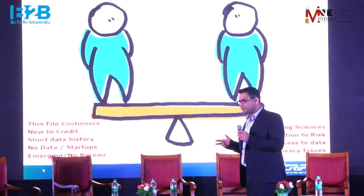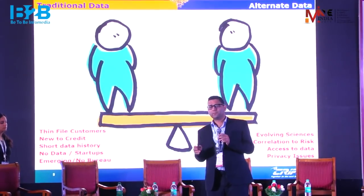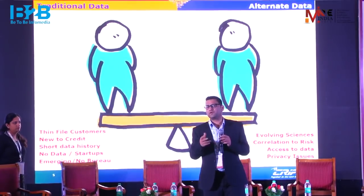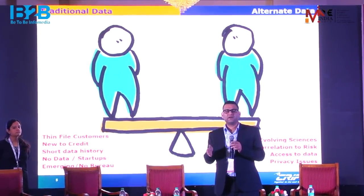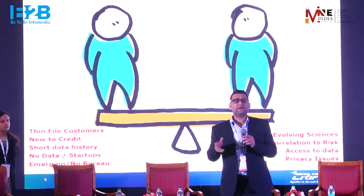Alternate data also has its own limitations. These are evolving sciences — every day a new approach claims to improve on the last. We still need to measure long-term correlation with risk. Bureau payment behavior is a proven strong predictor of risk, but a LinkedIn profile may not be — though it might become more correlated in the future. Additionally, not everyone is willing to share privacy data, so access to social scores is not guaranteed.